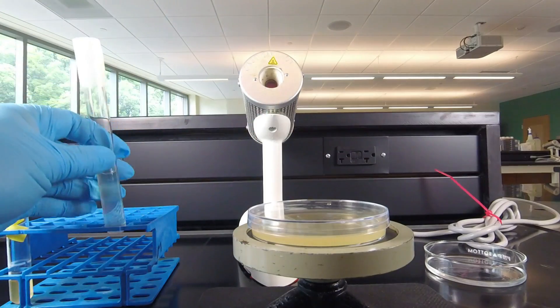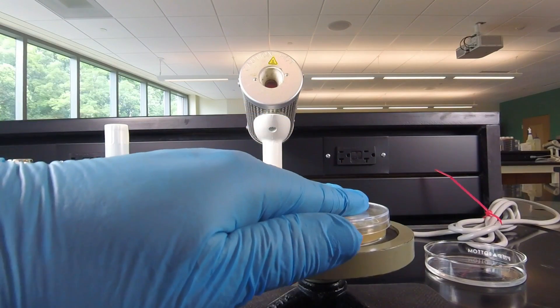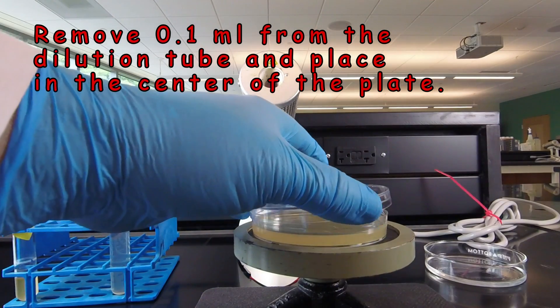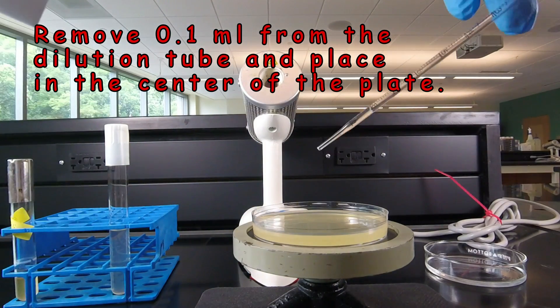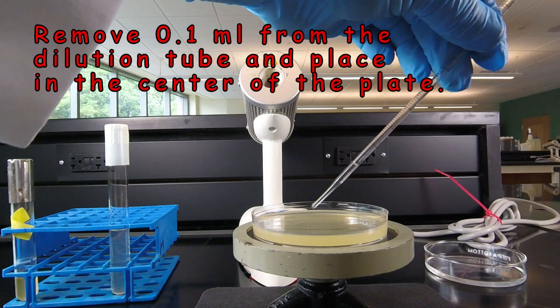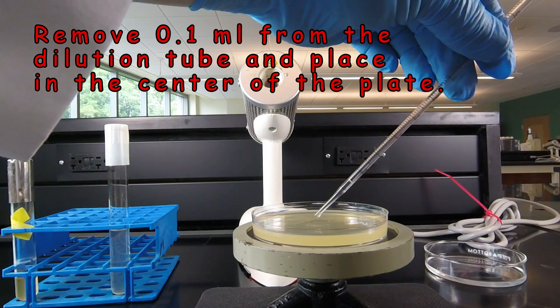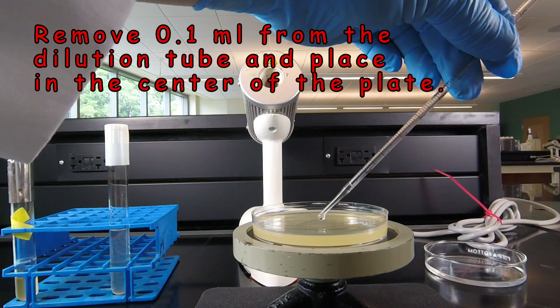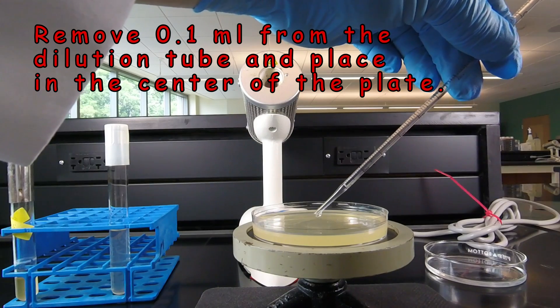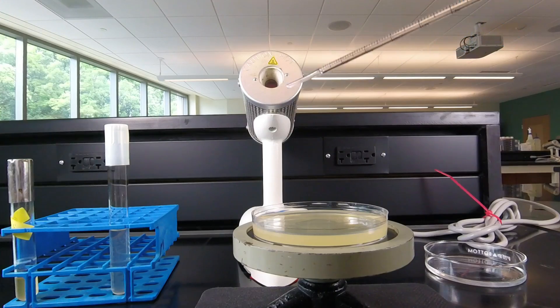Now we're ready to put the bacteria on the petri plate. To do that we do have to remove the lid. You want to have good control over the pipette. We're going to dispense that tenth of a milliliter in the center of the plate. So there is our one tenth of a milliliter. It's about three drops.